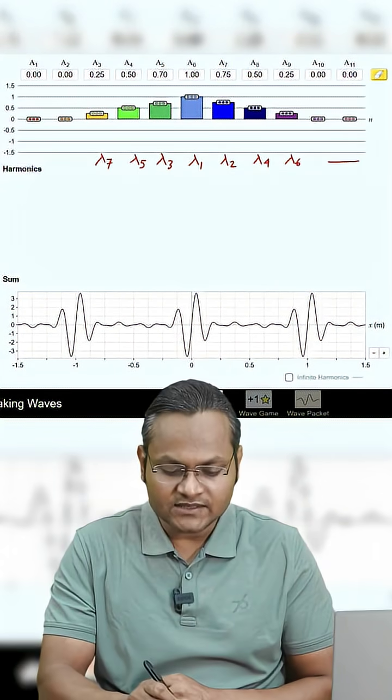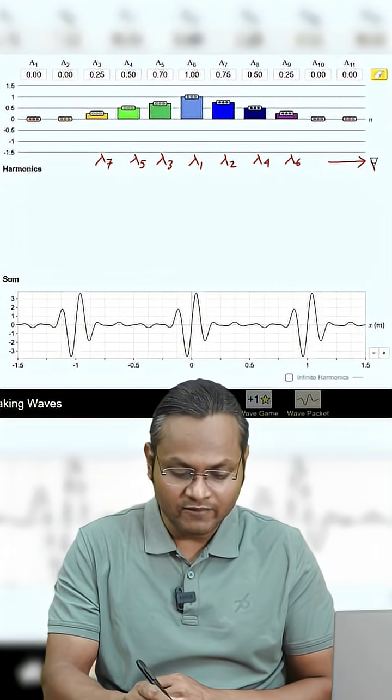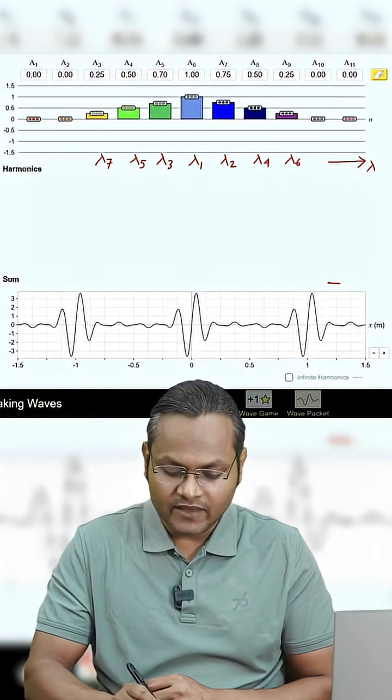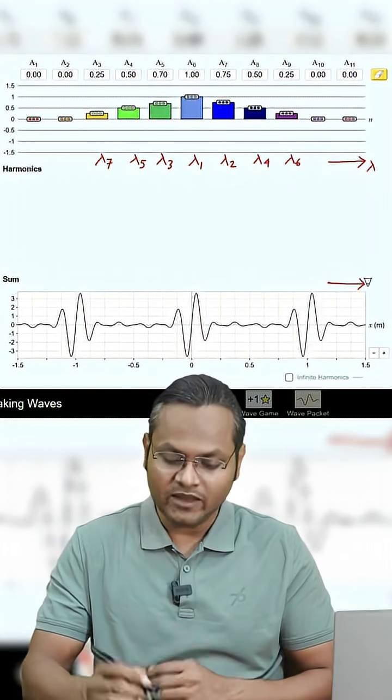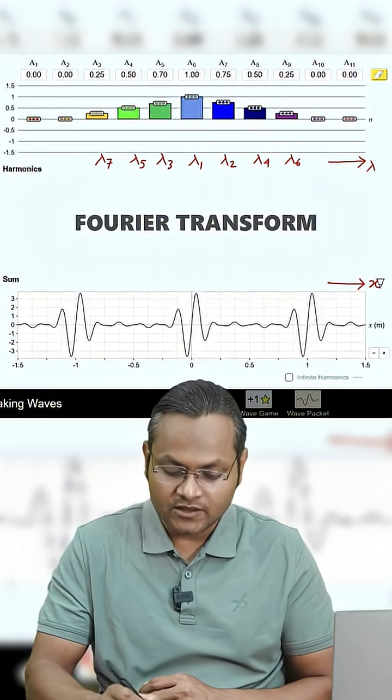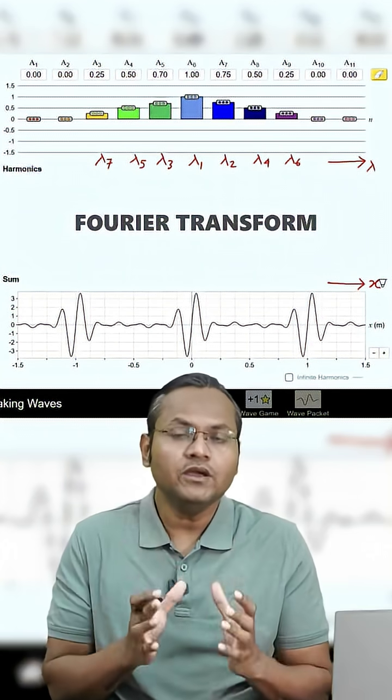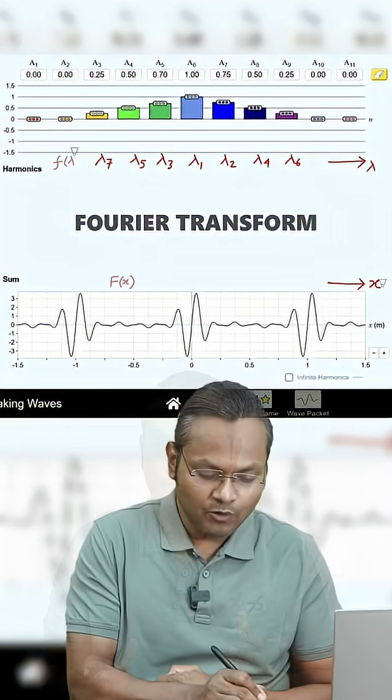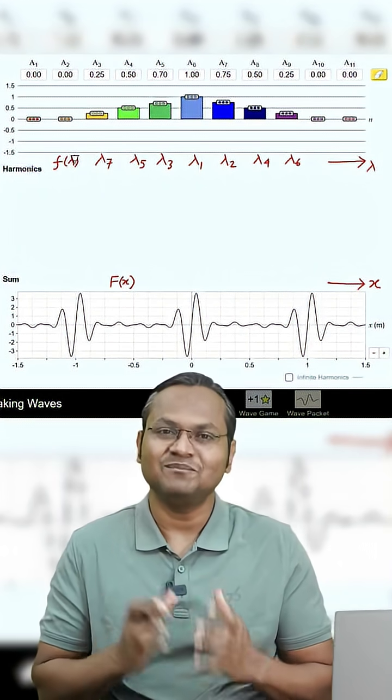So essentially, the first graph is a distribution of wavelengths and the second graph is the distribution of all these wavelengths in position space. इसी को फूरियर ट्रांस्फॉर्म कहते हैं.